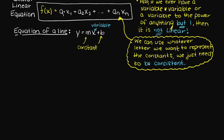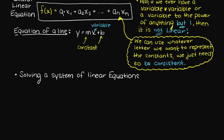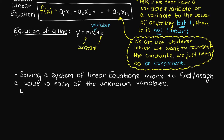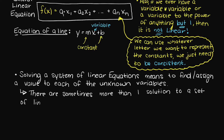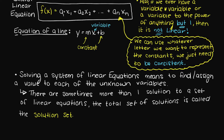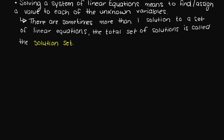So you may ask: what would it mean to solve a system of linear equations? We will go through the methods of actually solving these systems in future videos within this playlist. For now, just know that solving a system of linear equations essentially means to find and assign a value to each of your unknown variables. Because there are sometimes more than one solution, the total set of solutions is called the solution set.